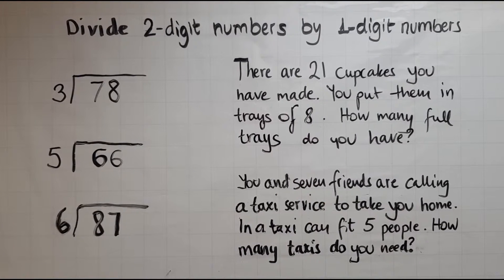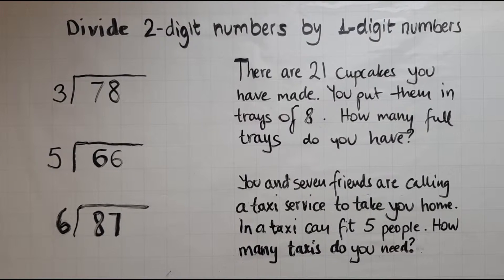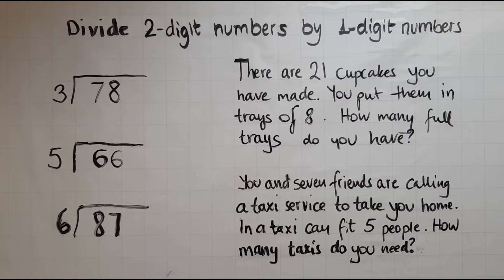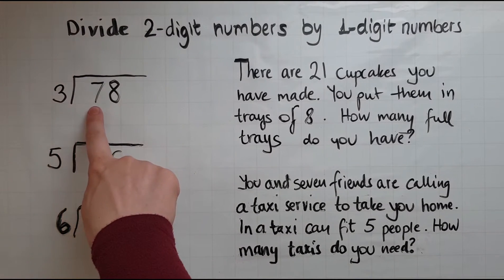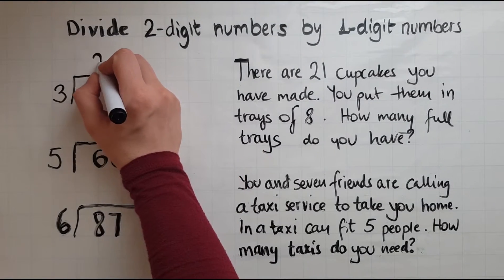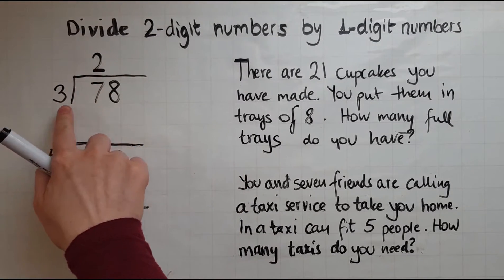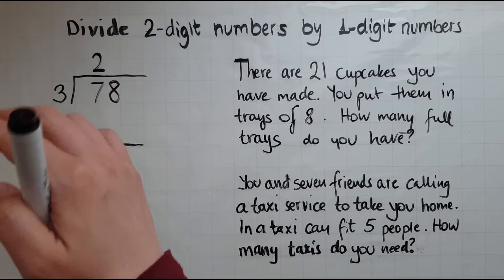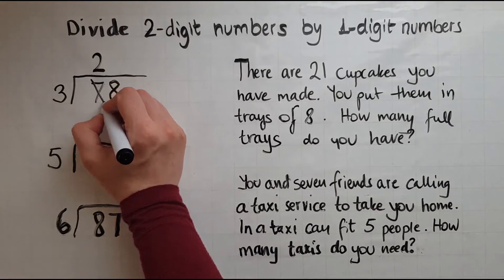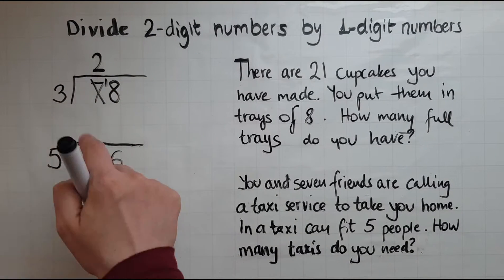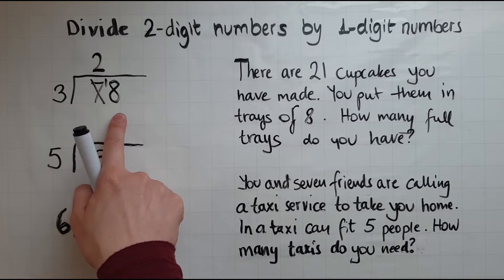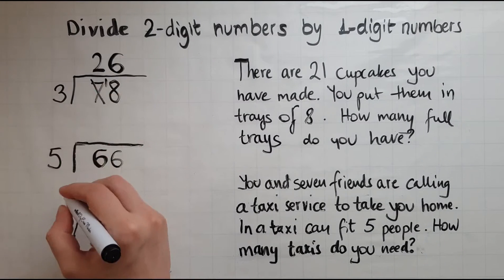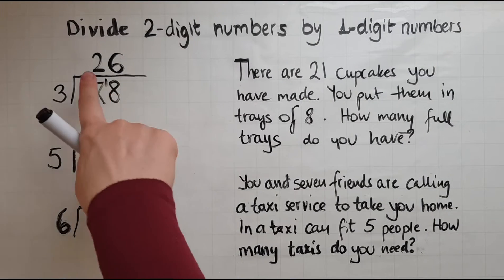We'll now look at a few more examples of dividing 2 digit numbers by 1 digit numbers. I've got 78 divided by 3. So I'll look at how many 3's fit into 7, and that is 2 because 3 and 3 make 6. If I take away 6 from the 7, there is 1 left. Now how many 3's fit into 18? And that is 6, and there is nothing left. So my answer is 26.